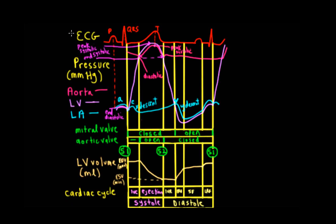Now, for the Wiggers diagram — looking at the left side, though all principles apply to the right — for the atria, we have the A wave, which corresponds to atrial contraction occurring just after atrial depolarization, seen as the P wave. We have the C wave, which coincides with AV valve closure after the ventricles contract, triggered by ventricular depolarization seen as the QRS complex.